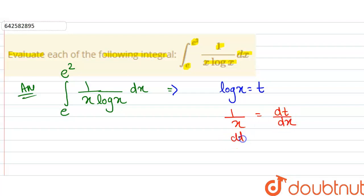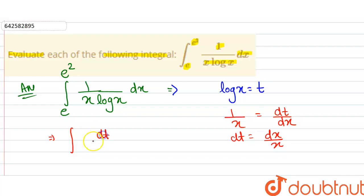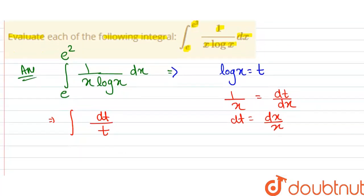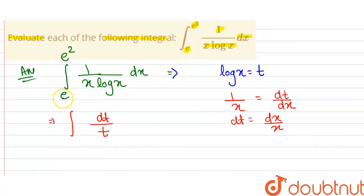So dt can be written as dx/x. Substituting, 1/x dx becomes dt, and log x becomes t. Now we also need to convert the limits. Putting x = e, we get t = log e = 1.